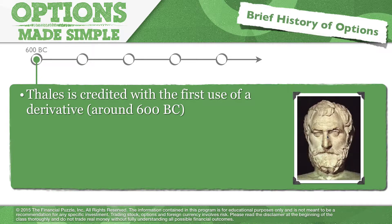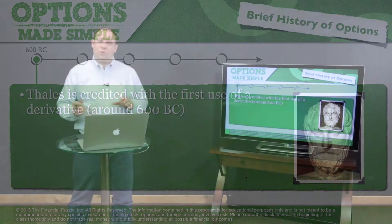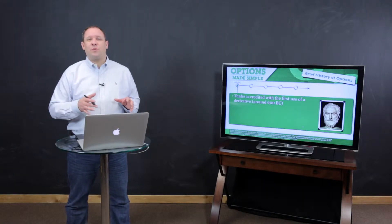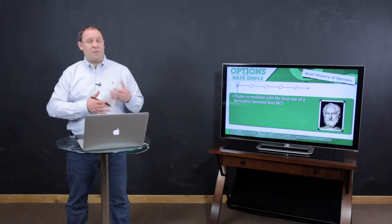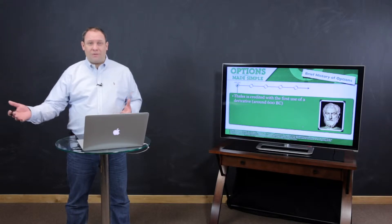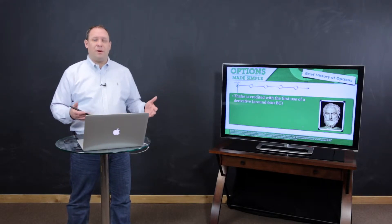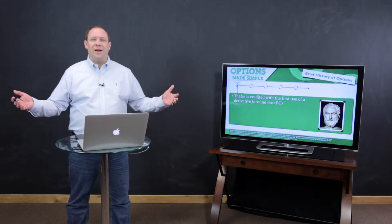Thales is credited as being one of the first to use derivatives, way back at 600 BC with the olive presses. He recognized there was going to be a greater-than-normal harvest of olives, so he bought the right to all of the olive presses. When the huge harvest came and people needed olive presses, they had to contact Thales — he didn't own them, he just had the exclusive right to them. That was basically an option.